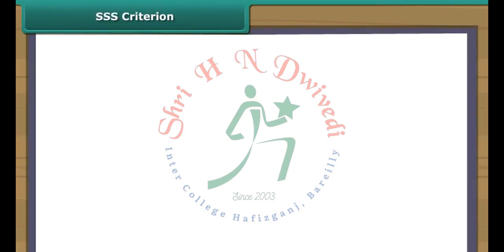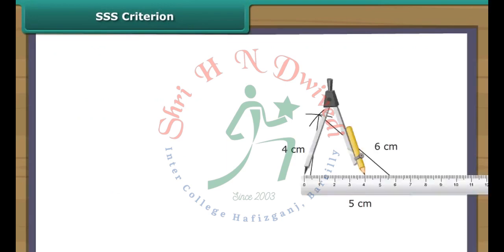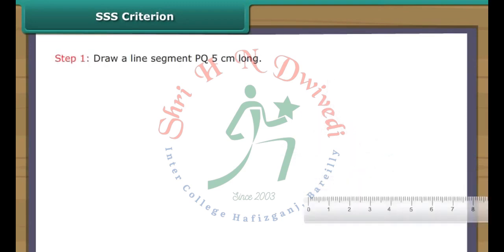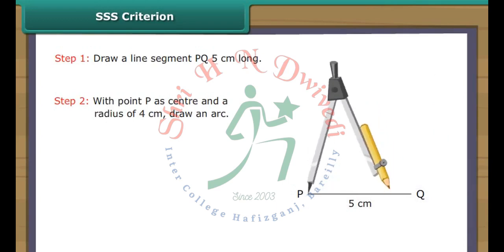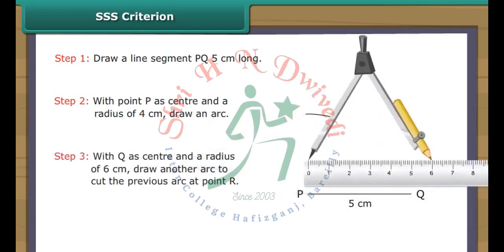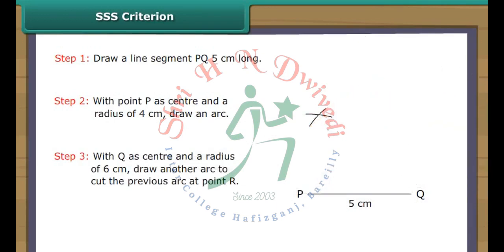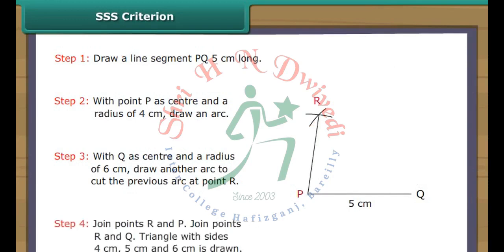SSS Criterion. Let us draw a triangle whose three sides measure 4 cm, 5 cm and 6 cm with the help of a ruler and a compass. Draw a line segment PQ 5 cm long. With point P as center and a radius of 4 cm, draw an arc. With point Q as center and a radius of 6 cm, draw an arc to cut the previous arc at point R. Join points R and P, and join points R and Q. Triangle with sides 4 cm, 5 cm and 6 cm is drawn.